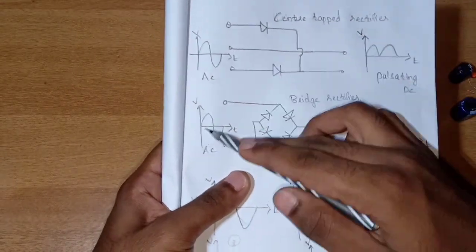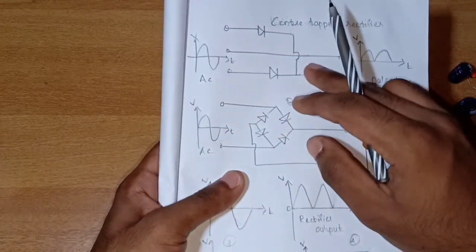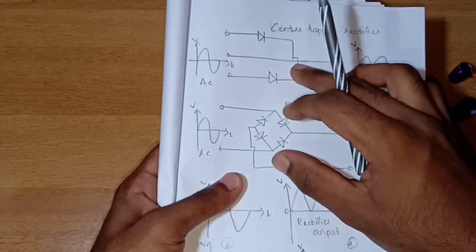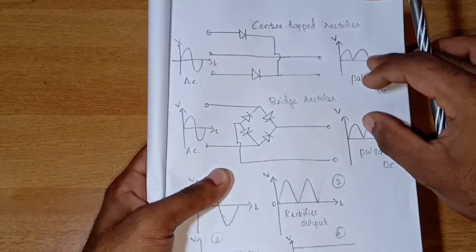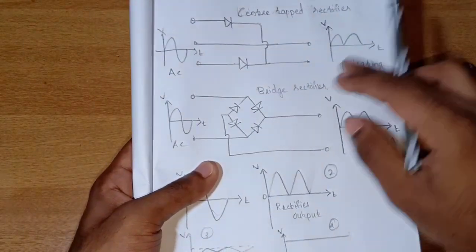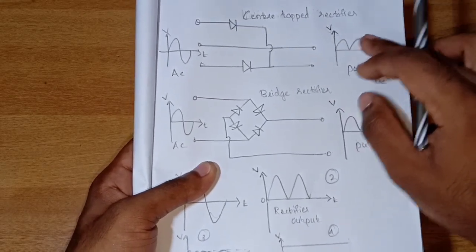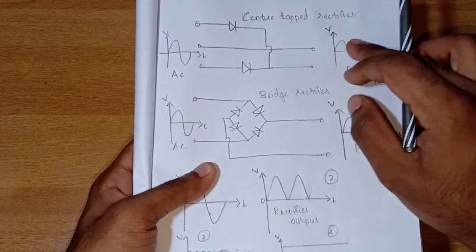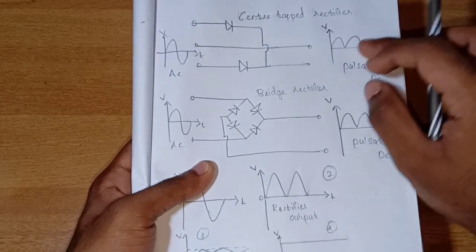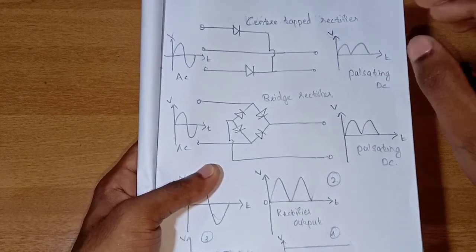The input is AC voltage. The output of the rectifier is pulsating DC. This pulsating DC also contains AC components, and this can cause damage to our devices.